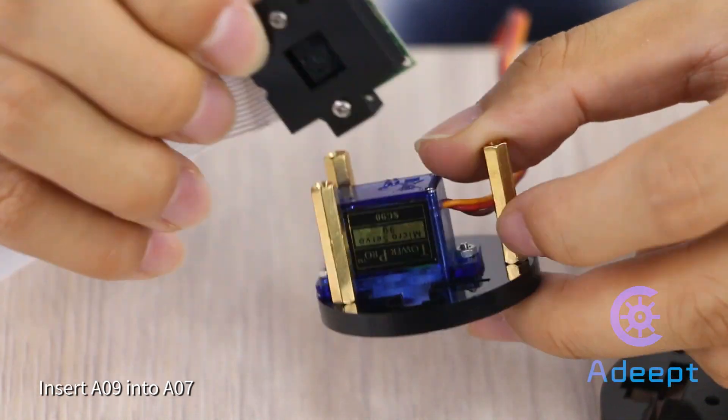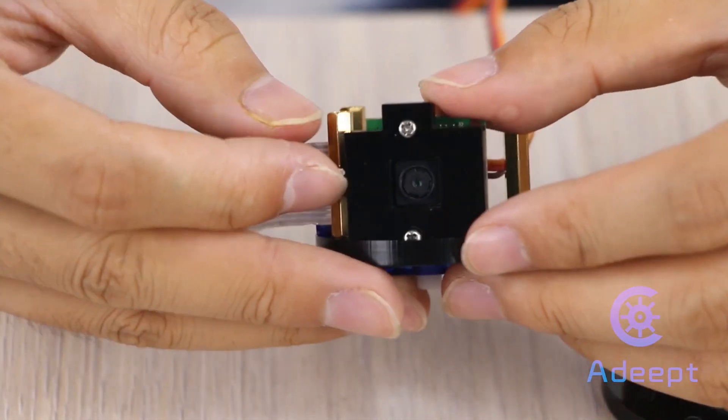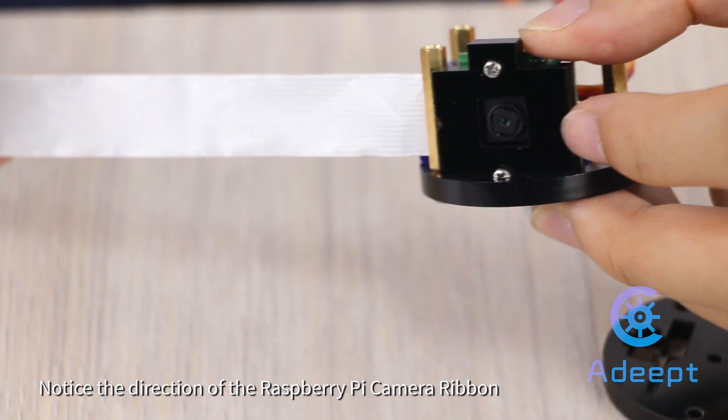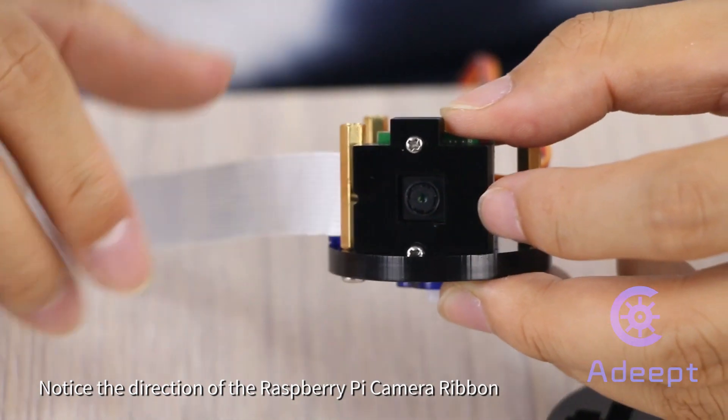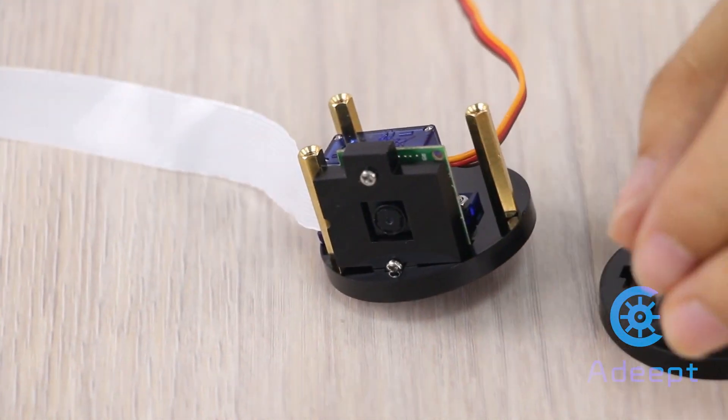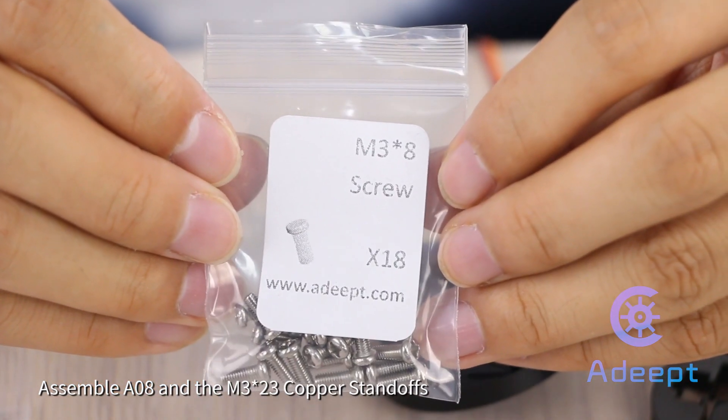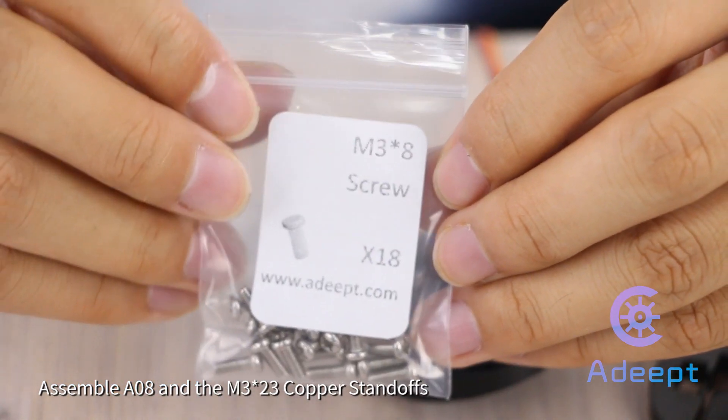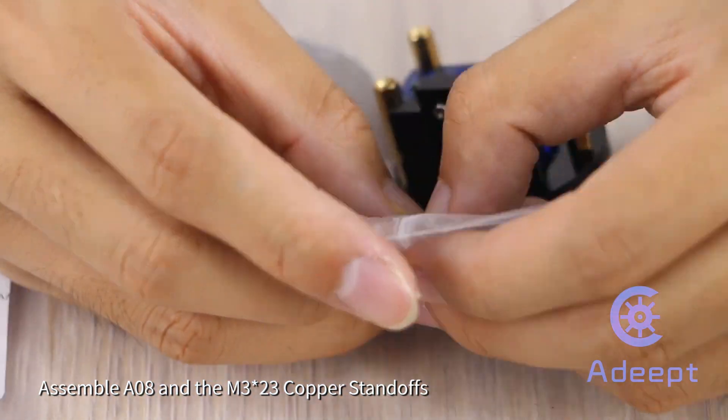Insert A09 into A07. Notice the direction of the Raspberry Pi camera ribbon. Assemble A08 and the M3 multiple 23 copper standoffs.